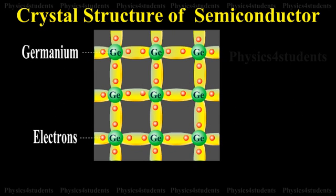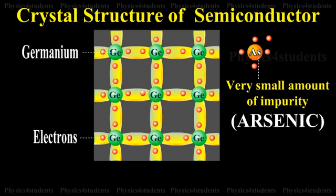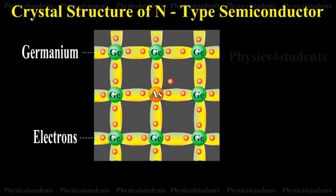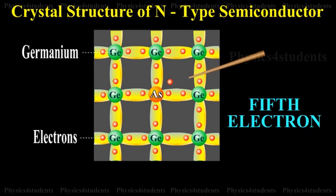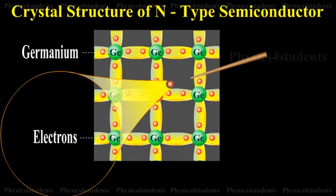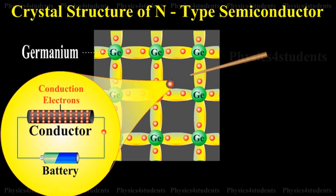The diagram shows the crystal structure obtained when pentavalent arsenic impurity is added to pure germanium crystal. The four valence electrons of the arsenic atom form covalent bonds with electrons of four neighboring germanium atoms. The fifth electron of arsenic atom is loosely bound. This electron can move about almost as an electron in a conductor and hence it will be the carrier of the current.